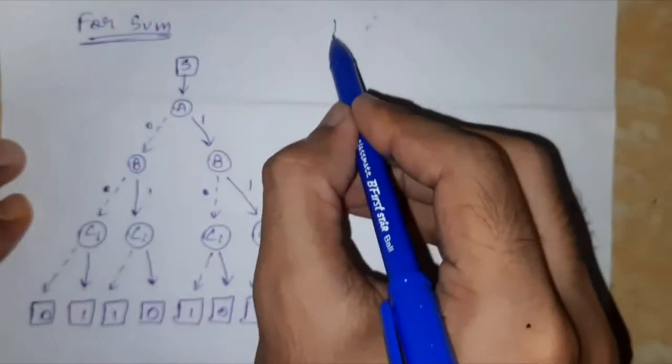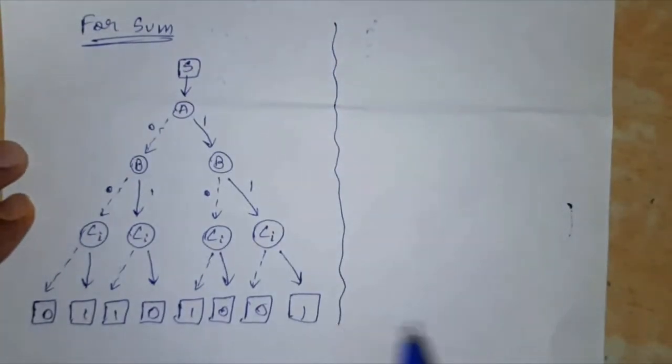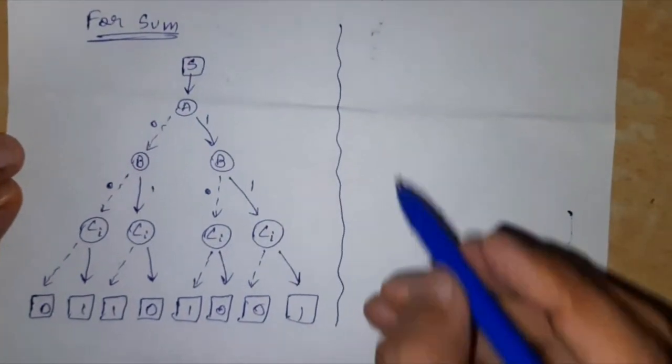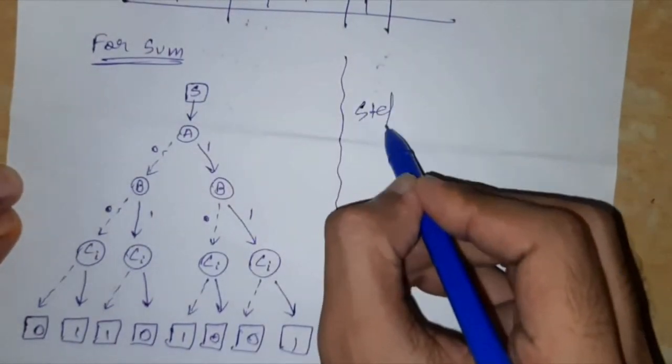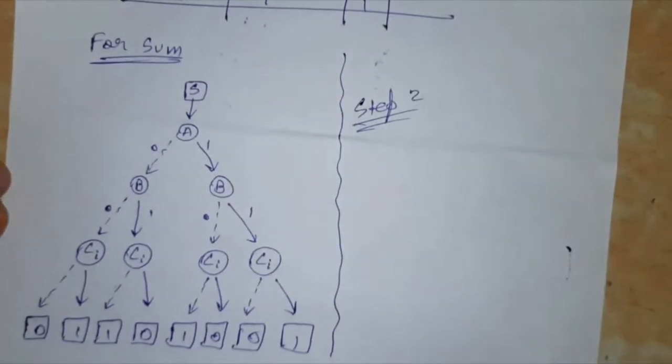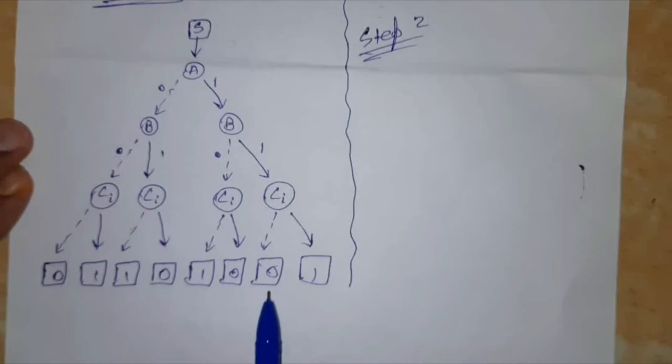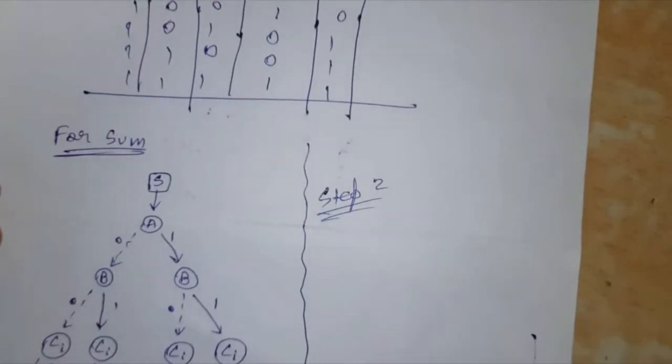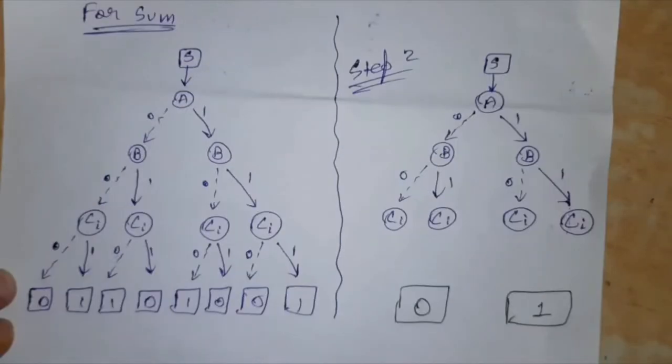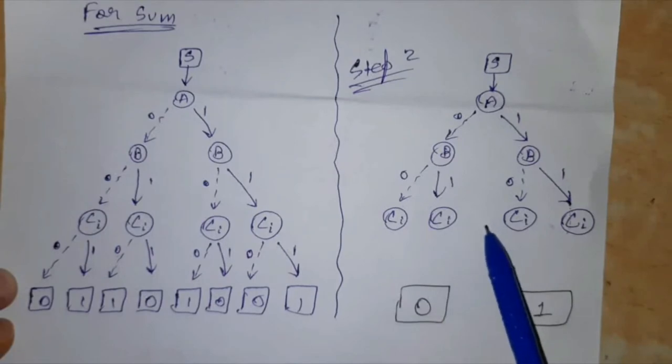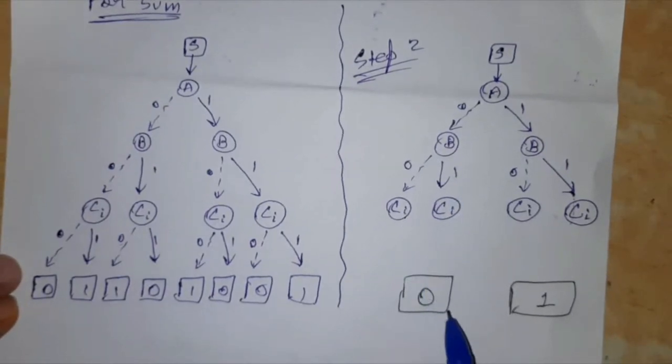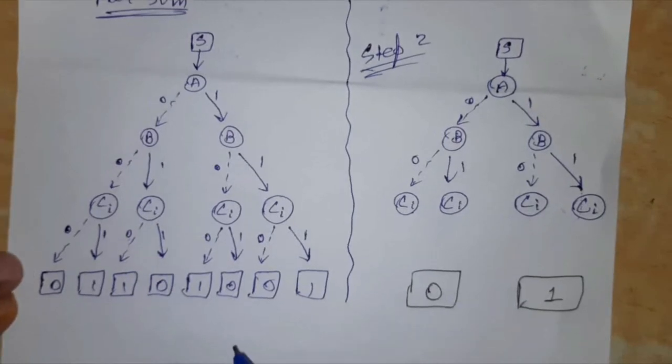Now the second step, let me draw just side by side so we can compare it. This is step 2 where we are removing the terminal nodes and reducing them to 0 and 1, just the two nodes. So I will just quickly draw it. So here the three levels are drawn and from CI how we will move towards 0 and 1 that I will show you.